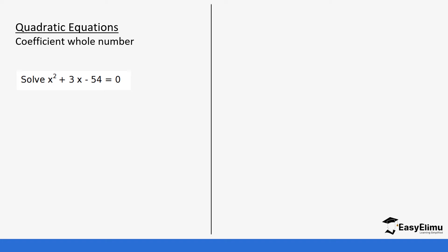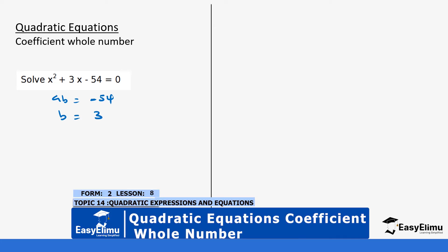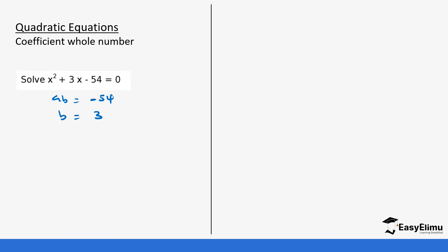We are going to factorize as we did before. So our AB is going to be 1 times negative 54, which becomes negative 54. And our sum is going to be 3. We need two numbers such that if you multiply them you get negative 54, and if you add them you get positive 3. We can use the values of 9 and 6. If you multiply 9 times 6 you get 54, but it's negative 54, so it's negative 6 times 9 — negative 6 plus 9 gives us positive 3, and that's what we want.